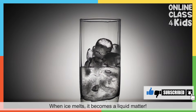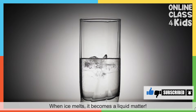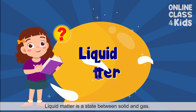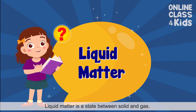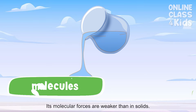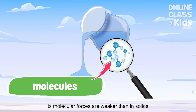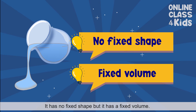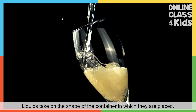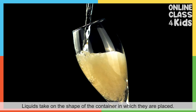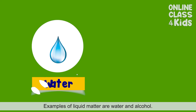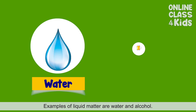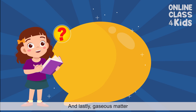When ice melts, it becomes liquid matter. Liquid matter is a state between solid and gas. Its molecular forces are weaker than in solids. The molecules in a liquid are in constant motion. It has no fixed shape, but it has a fixed volume. Liquids take on the shape of the container in which they are placed. Examples of liquid matter are water and alcohol.